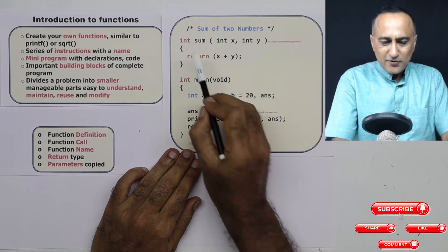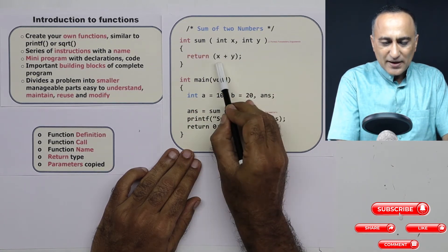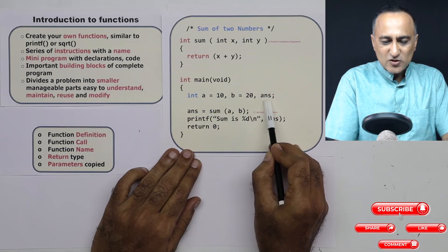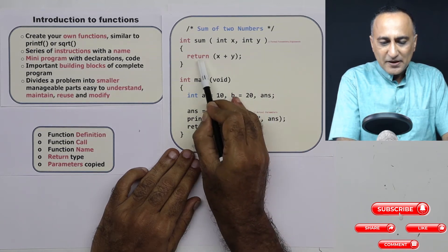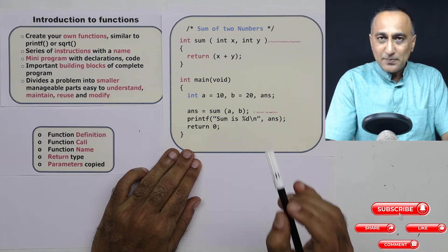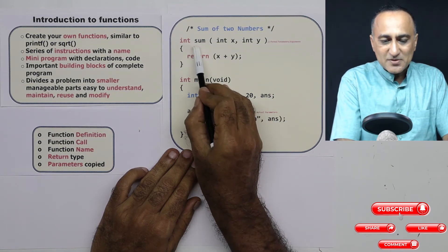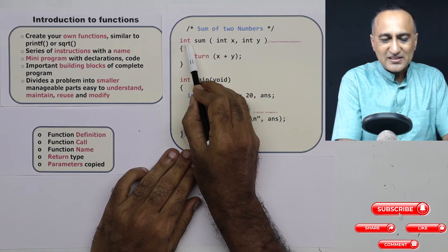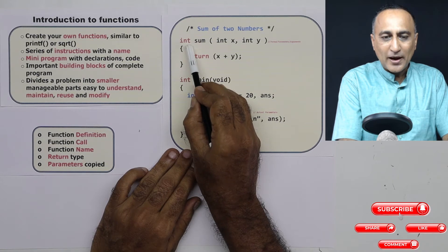Now if you see here, x and y are integers, answer is also an integer. I am returning a value which is of the type integer. That's why I am saying this function returns an integer type of value.